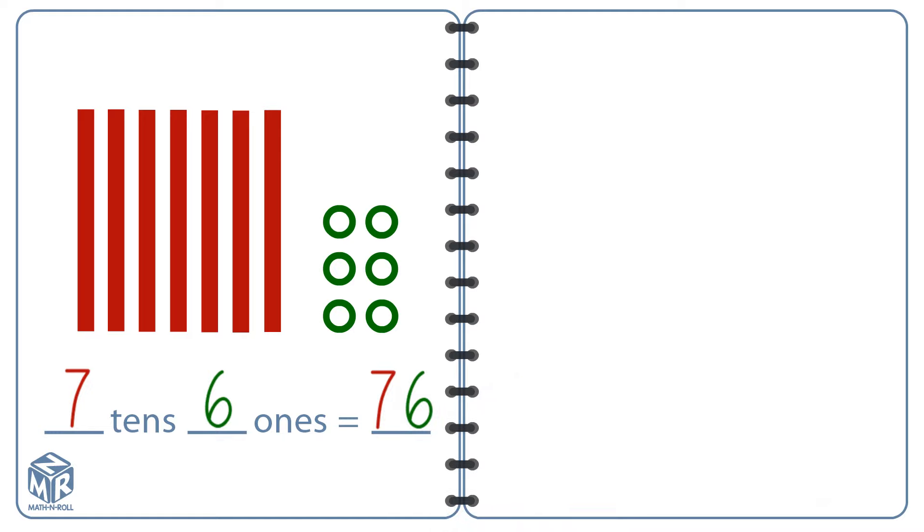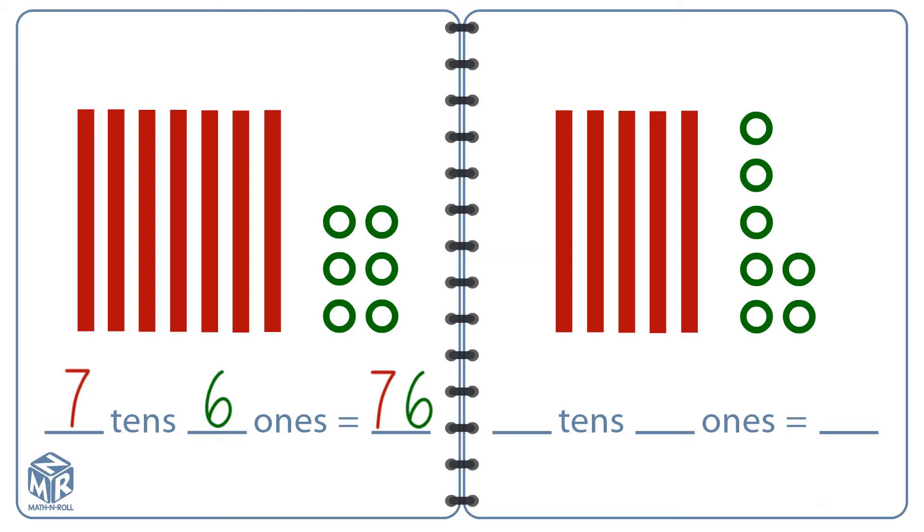Let's try another one. We have five bars, or five 10s, and seven circles, or seven 1s. We can write five 10s and seven 1s as 57.